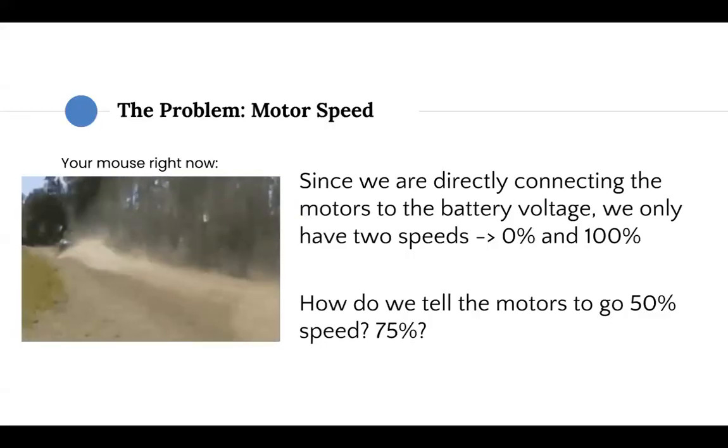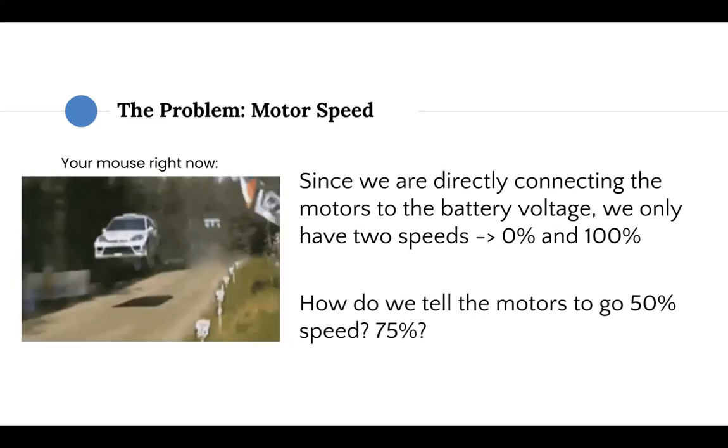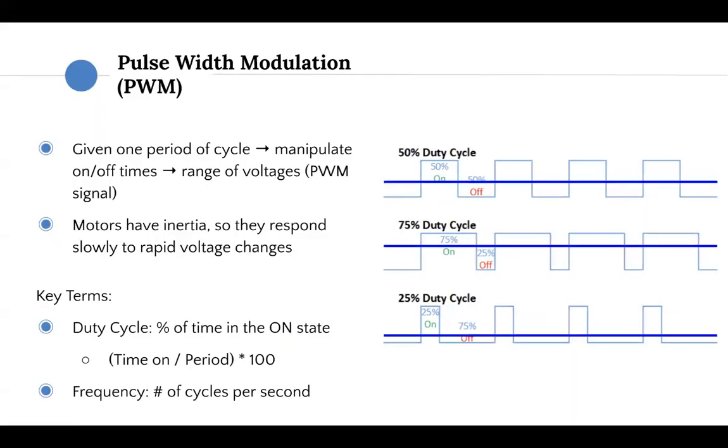And now for motor speed or the rotational velocity of the shafts. So currently, our micromouse, we can turn on and off the motor, but only at two speeds, 0% or 100%. So how do we actually get it to be able to go at some in-between speed? Pulse width modulation, or PWM. We can manipulate for how long the signal is high and how long the signal is low. This will enable us to get a range of voltages from 0% to 100%. So how does this actually allow the motors to work at these in-between voltages? Well, the motors have inertia, so they respond slowly to these rapid voltage changes. Even if we're just switching between 0% and 100% very quickly, it will just seem as if we're powering the motors at an in-between voltage.